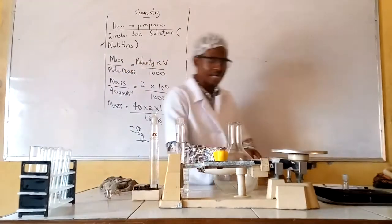Mass equals the molar mass from the bottle is 40 grams per mole. We have 40 grams per mole equals to the molarity is 2 times the volume is 100 divided by 1,000. By the time you do this, you are going to have 8 grams. Now what is the implication? I need to weigh my 8 grams.